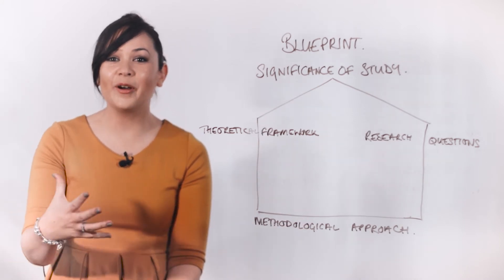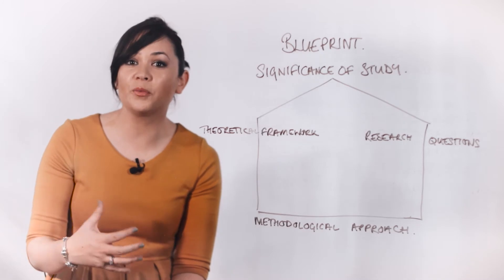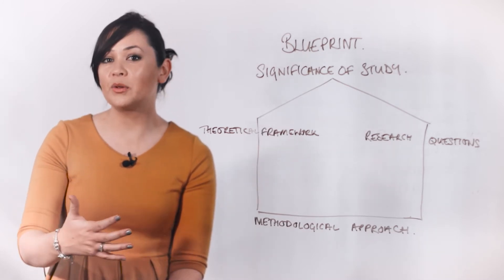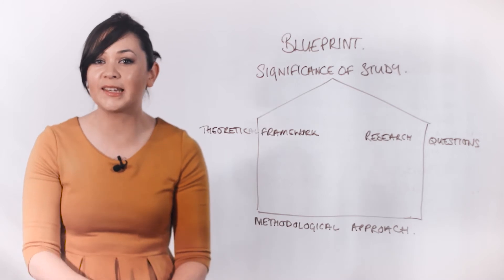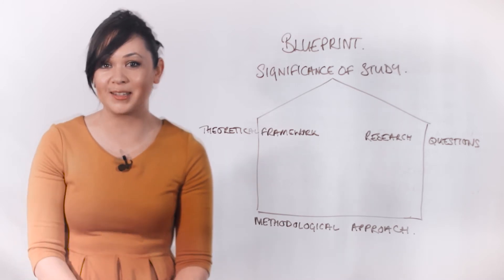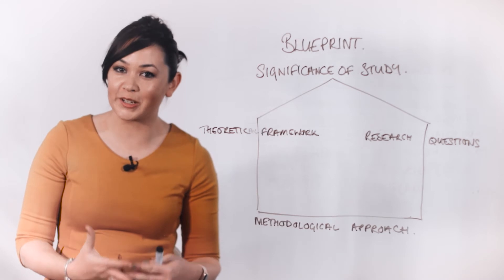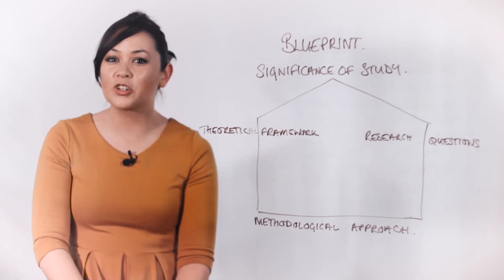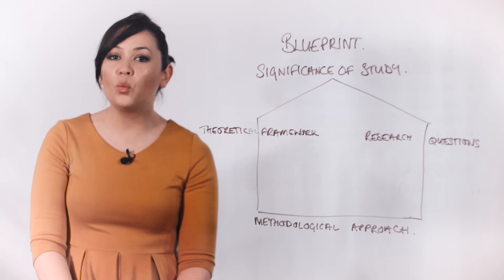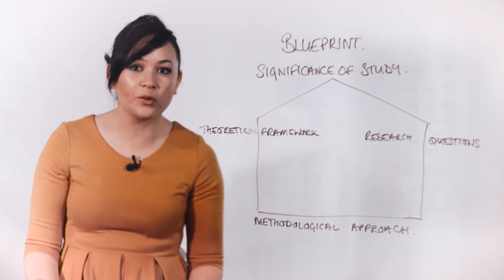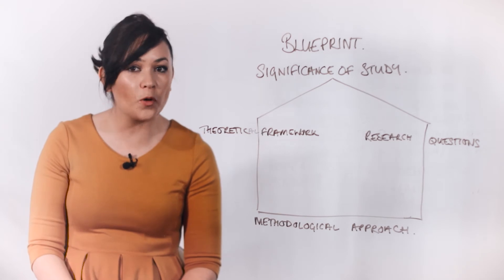Once the blueprint structure is in place — with a well-aligned purpose statement, theoretical framework, and research questions to go with your problem statement — you can fully develop the nature of the study and the significance of the study. You can then add the key details: an initial overview of background literature, data collection, instrumentation, and your analysis plan. Many elements of your study must emerge logically from the methodological approach you select, which is why we recommend clarifying your methodological approach early in the process.